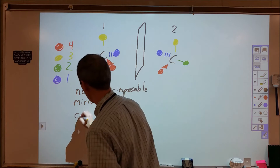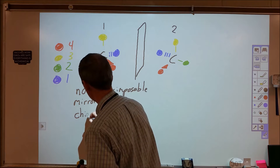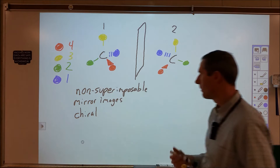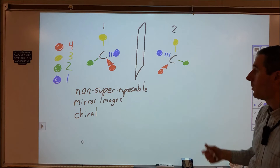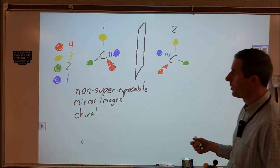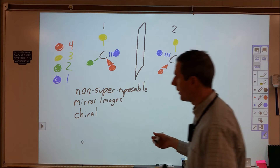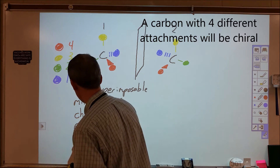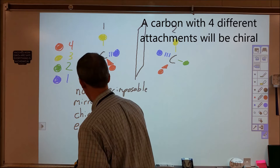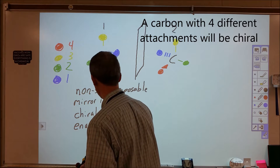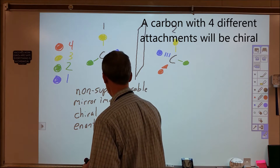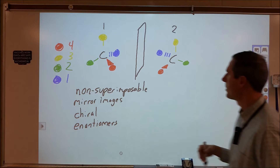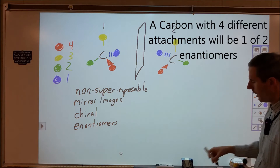There are two terms we use for that. One is called chiral — chiral means you have a non-superimposable mirror image. And enantiomers are the two things that have non-superimposable mirror images. We use both these terms pretty loosely surrounding these two.